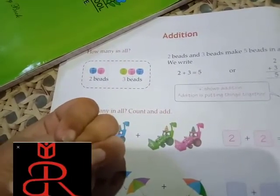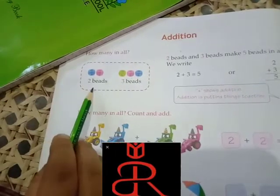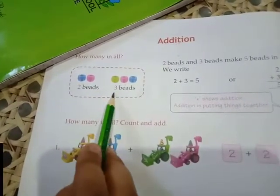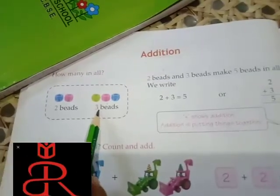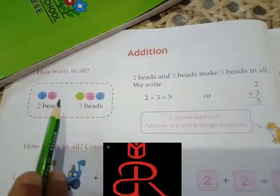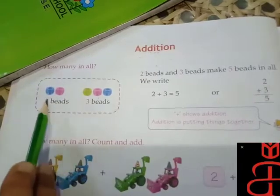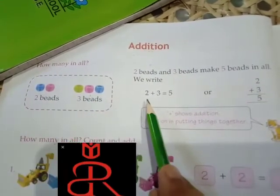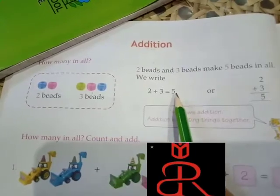It means, jab haamne two beats or three beats ko add kya, toh total kitthi beats haamayi paas? Hamaare paas haagayi five beats. So, when we will add two and three together, the answer would be five. See, yaha pae likhha hai, two plus three is five.